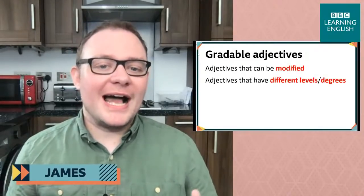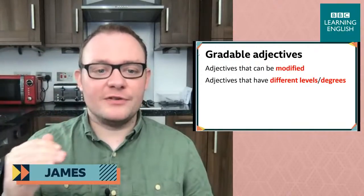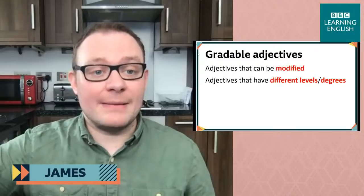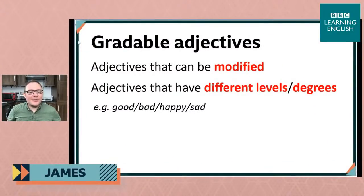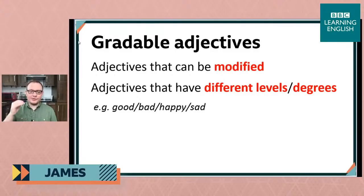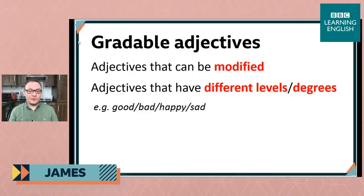So what we're looking at here are gradable adjectives. Cold is a gradable adjective, and what that means is that it can be modified. These are adjectives that have different levels or different degrees. Cold is one example, and there are also others: good, bad, happy, and sad are all gradable adjectives. There are different levels to how good or bad something is, or how happy or sad you are. We show those different degrees by using modifiers — and that's what we're going to look at first: how to modify gradable adjectives.